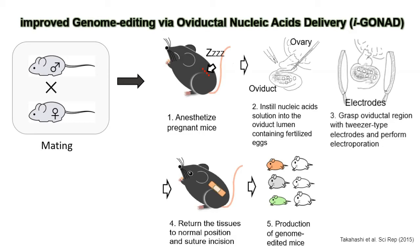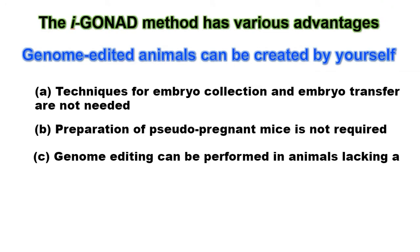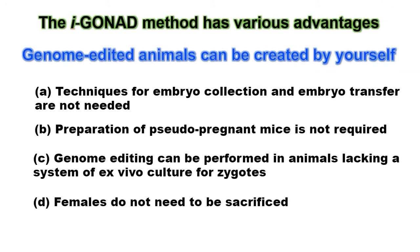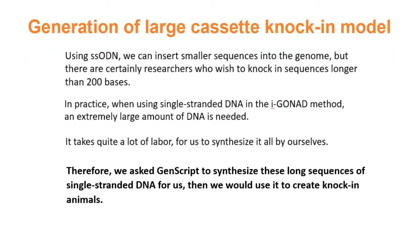Genome-edited animals can be created by yourself. The techniques for embryo collection and embryo transfer are not needed, preparation of pseudopregnant mice is not required, genome editing can be performed in animals lacking a system of ex vivo culture for zygotes, and females do not need to be sacrificed. Using single-stranded ODN, we can insert smaller sequences into the genome, but there are researchers who wish to knock in sequences longer than 200 bases. When using single-stranded DNA in the I-Gonad method, an extremely large amount of DNA is needed.